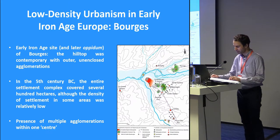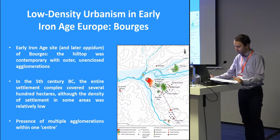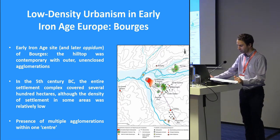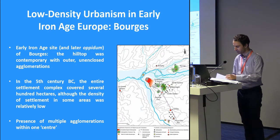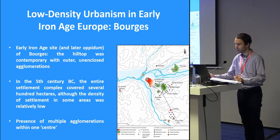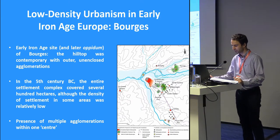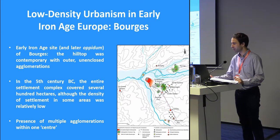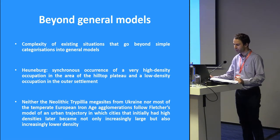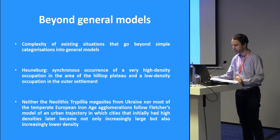In the case of the early Iron Age site of Bourges in central France, investigations have revealed open settlements immediately opposite the hilltop enclosure and another in the adjacent valley. This appeared to have been focused on craft production, but also included high-status imports from the Mediterranean. In the 5th century BC, the entire settlement complex of Bourges covered several hundred hectares, although the density of settlement in some areas was relatively low. Just as many other early Iron Age centers, Bourges was a combination of an acropolis on a promontory, suburbs characterized by craft activities, and rich burials in the surroundings. The examples of Heunenburg and Bourges show the complexity of existing situations that go beyond simple categorizations into general models.